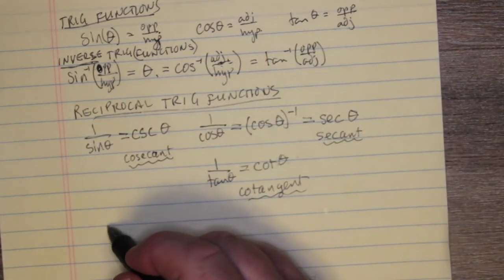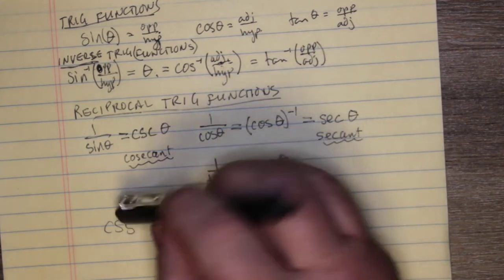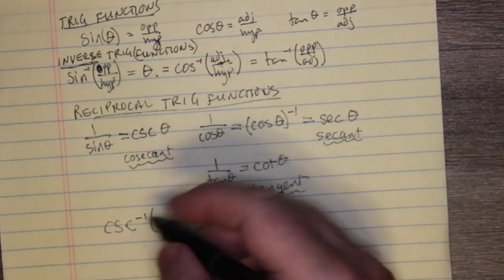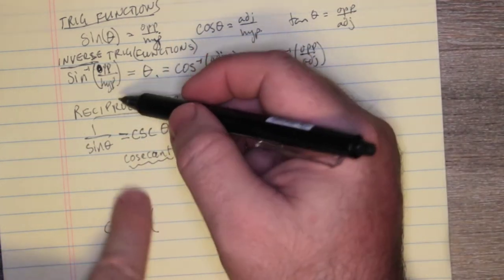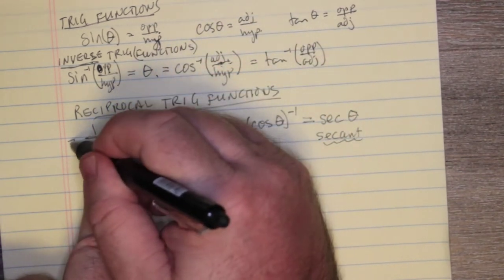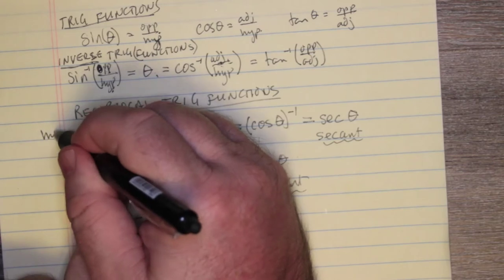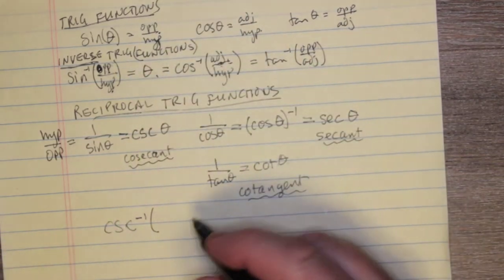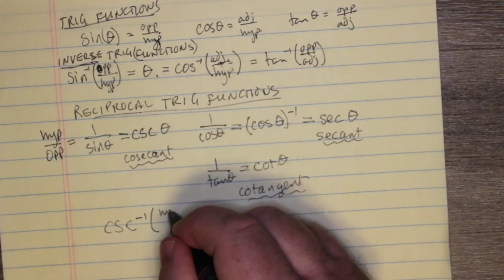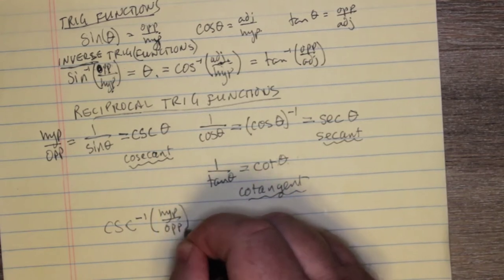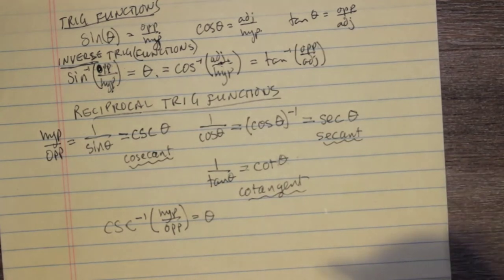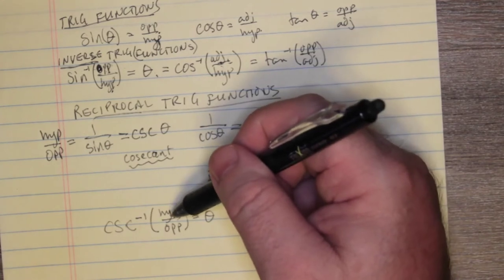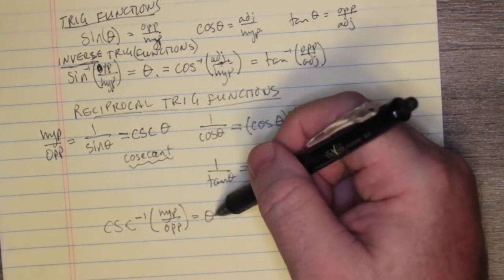We can also speak of csc to the minus one — the inverse cosecant. Since cosecant is one over sine, the input ratio is hypotenuse over opposite rather than opposite over hypotenuse. So the inverse cosecant of hypotenuse over opposite equals theta.